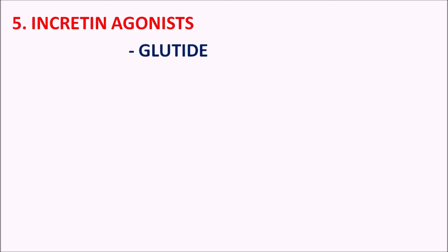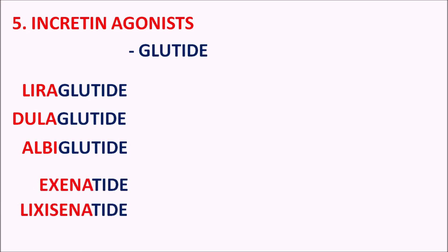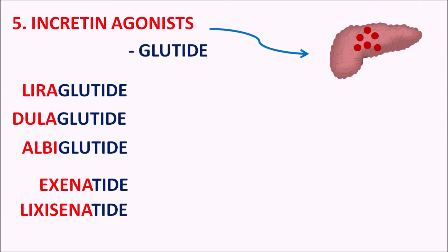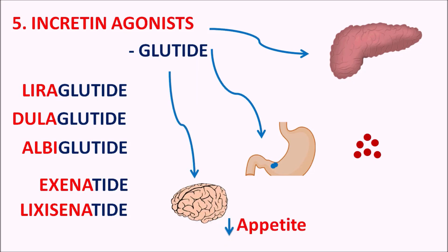Fifth are the incretin agonists, with the suffix GLUTIDE, because they are glucagon-like peptide agonists. Drugs include liraglutide, dulaglutide, and albiglutide. There are also drugs in this category with a different suffix: exenatide and lixisenatide, ending in TIDE rather than GLUTIDE — these are derived from non-human peptides. All these drugs act on the pancreas and affect the gastric system by delaying gastric emptying time. They also affect the brain to reduce appetite, which is why these drugs can produce weight loss in patients.